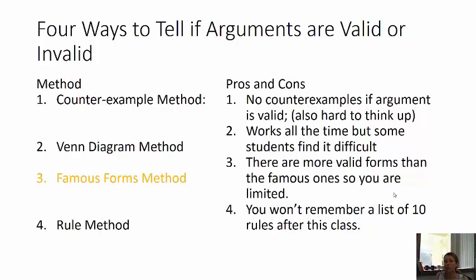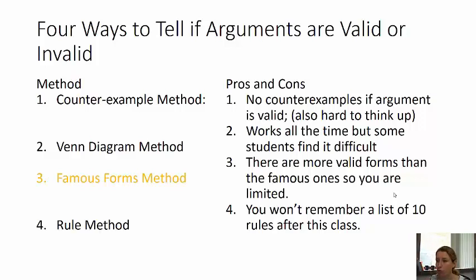The con of this method is that while it works with everything, sometimes it's hard to think up counter examples because the argument may be about some topic you're unfamiliar with. And second, if the argument is valid, you're not going to find a counter example — you can only come up with counter examples for invalid arguments.